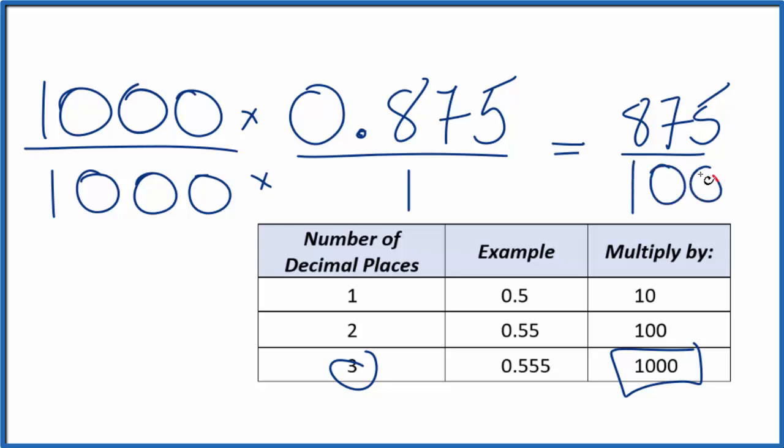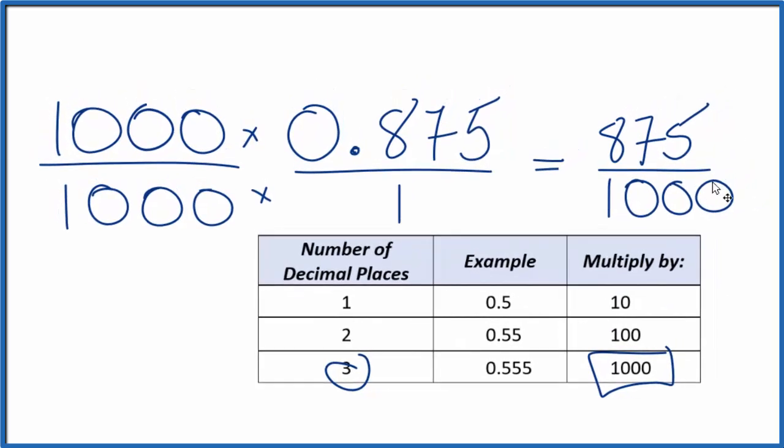So we can reduce this fraction down to simplest form. Let's give ourselves some room. 25 will go into 875 and a thousand.